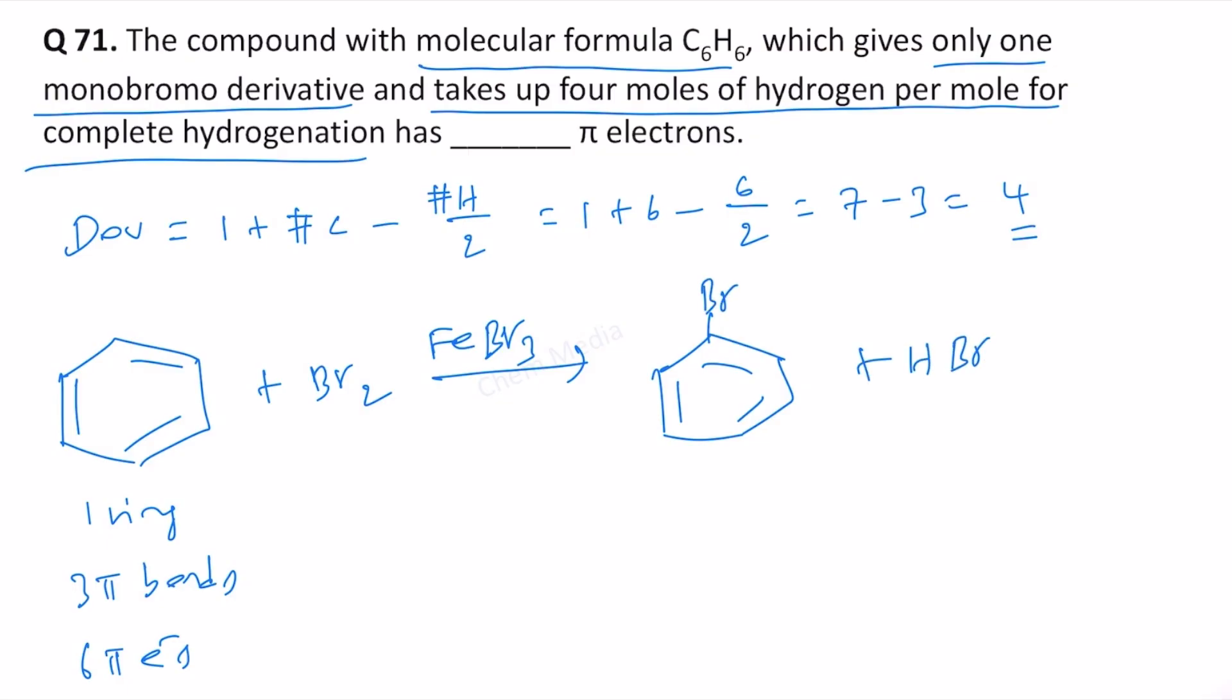However, complete hydrogenation of benzene requires only 3 moles of H2. In the presence of nickel, palladium, or platinum with high temperature and pressure, we get cyclohexane. This requires only 3 moles of H2, not 4 moles.